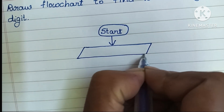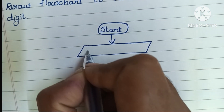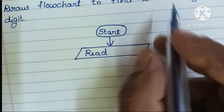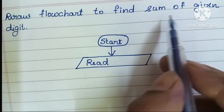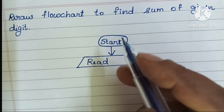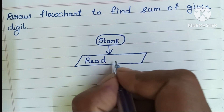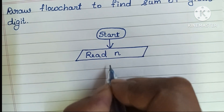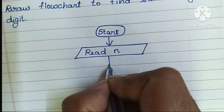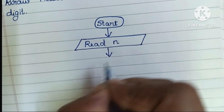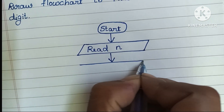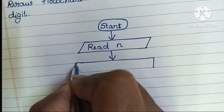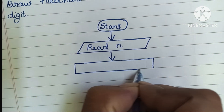Next, we have to read input values. Input values are written within a parallelogram shape. Here we have to read the input number, which is N.